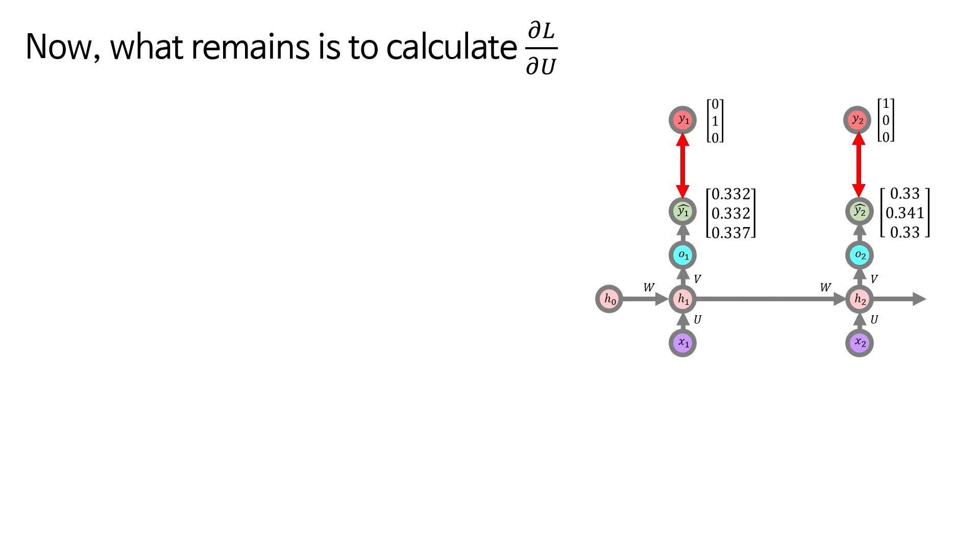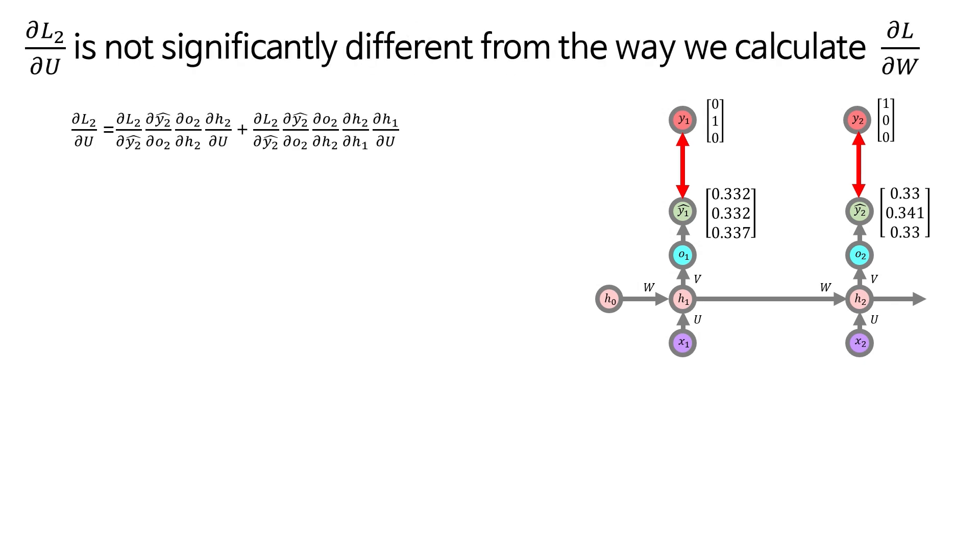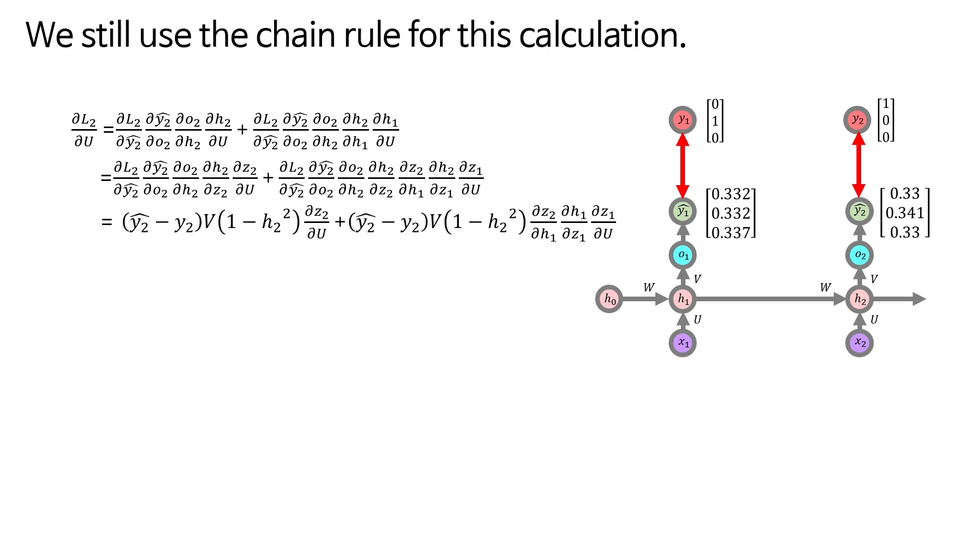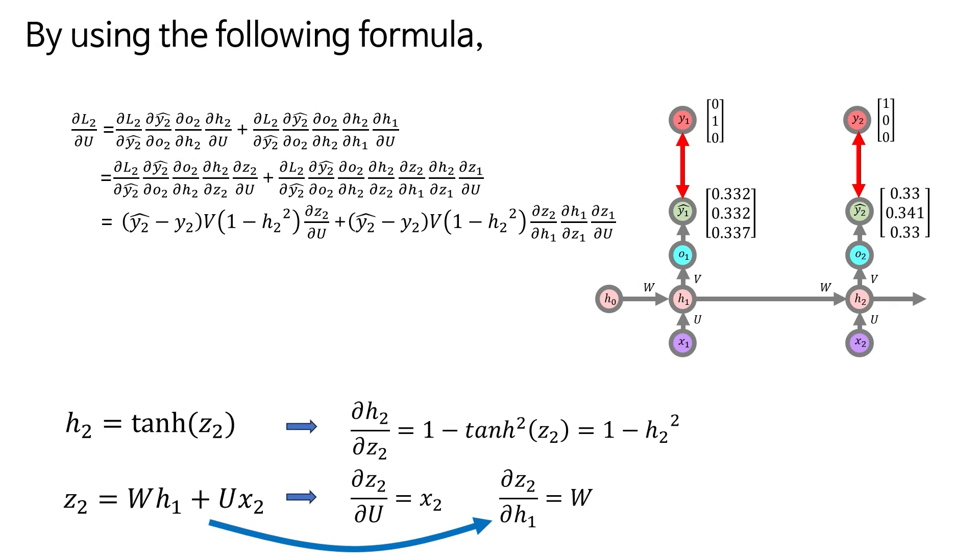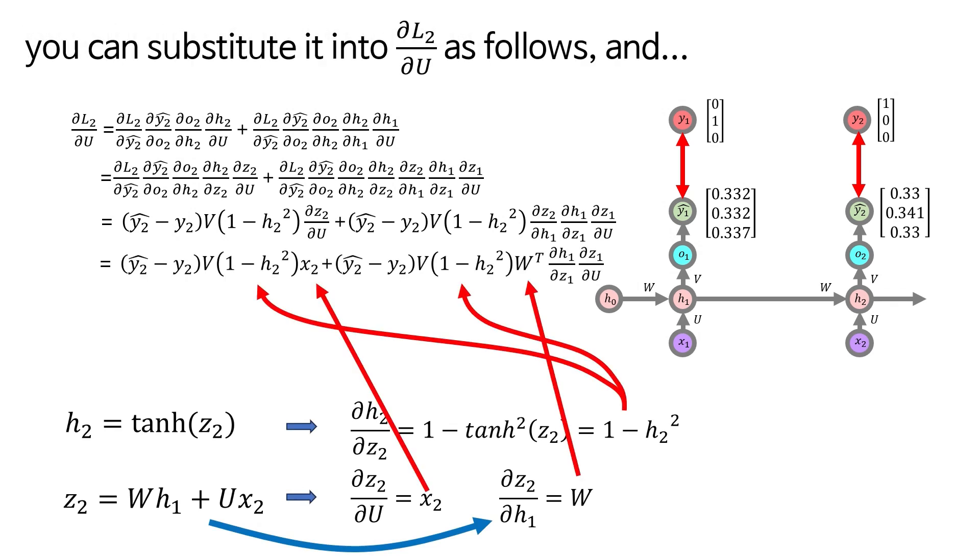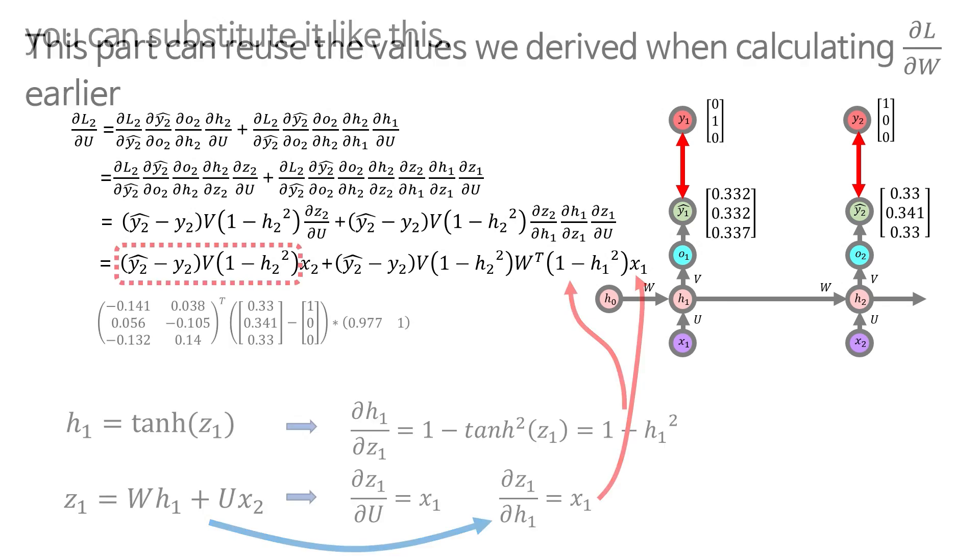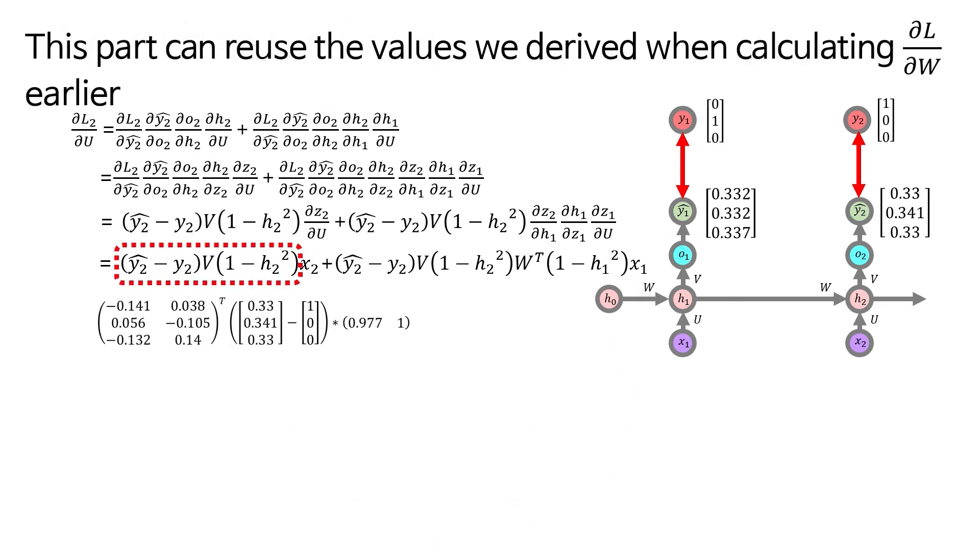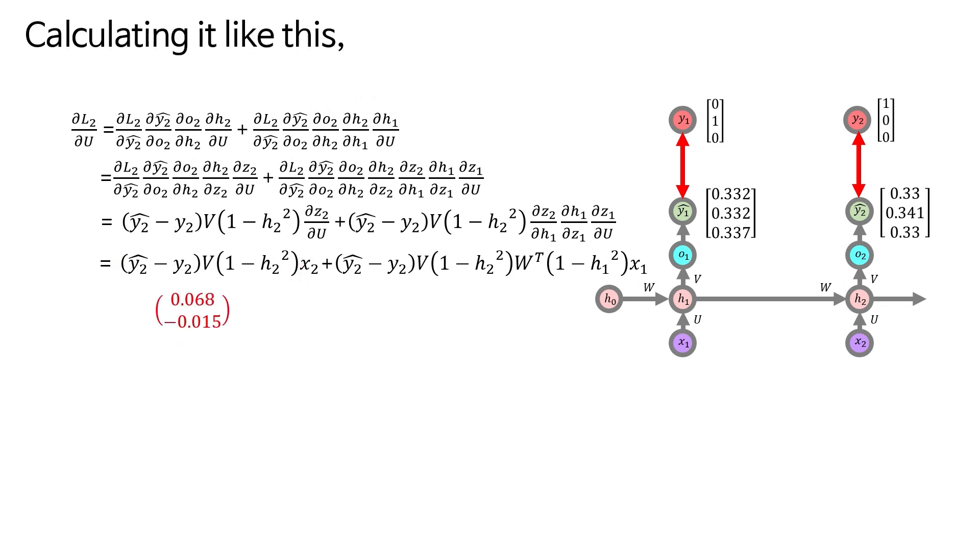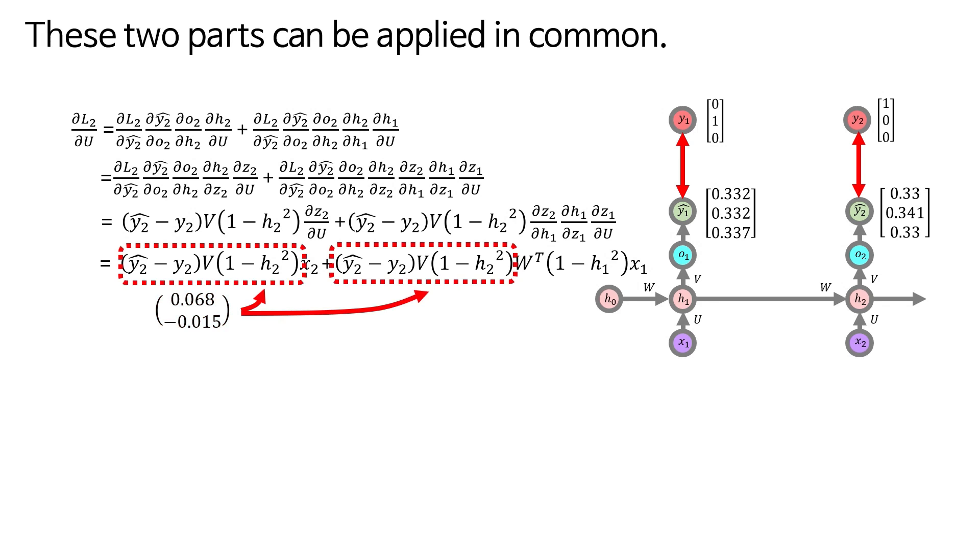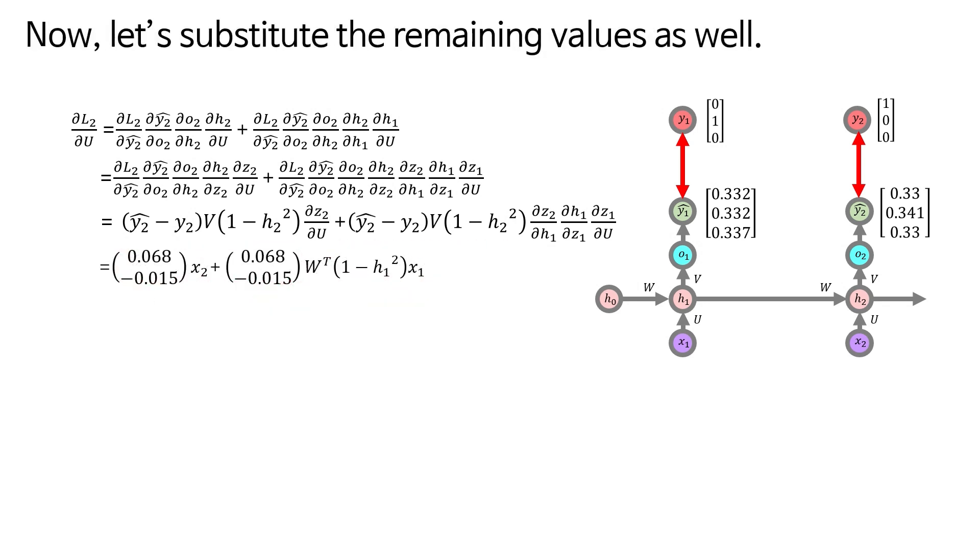Now, what remains is to calculate del L del U. Let's start by calculating del L2 del U for del L del U. Del L2 del U is not significantly different from the way we calculate del L del W. We still use the chain rule for this calculation. By using the following formula, you can substitute it into del L2 del U as follows, and by using the following formula, you can substitute it like this. This part can reuse the values we derived when calculating del L del W earlier. Calculating it like this. These two parts can be applied in common. Now, let's substitute the remaining values as well. And this way, we can obtain the values.